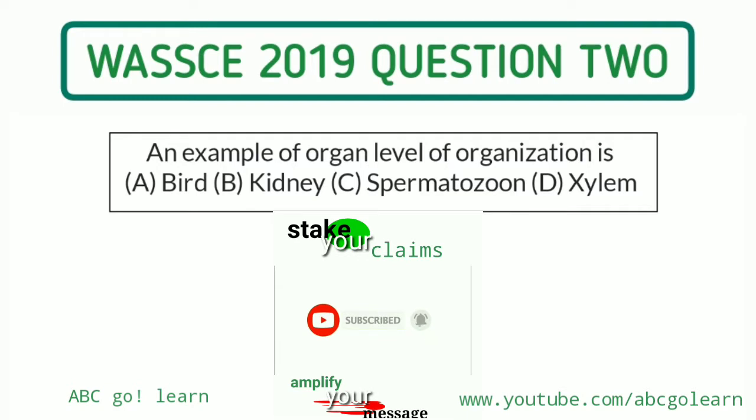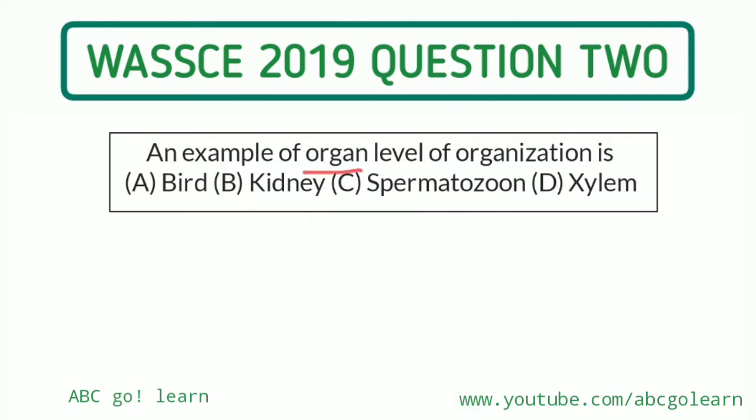An example of organ level of organization: is it A) bird, B) kidney, C) spermatozoon, or D) xylem? Just like I said in the first video, I'm not just going to solve this question — I'll also tell you how this question could be twisted to bring another question. When you are talking about organ, you should know what an organ is.